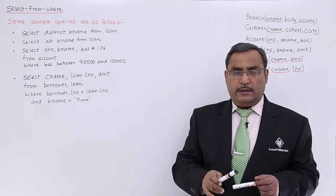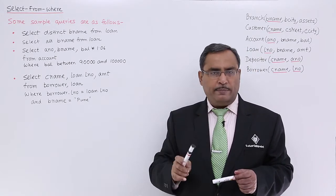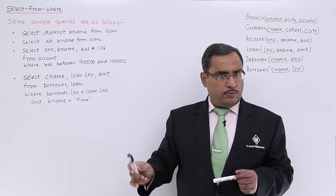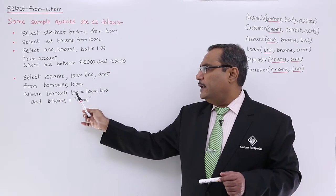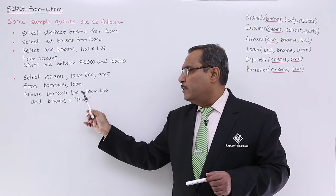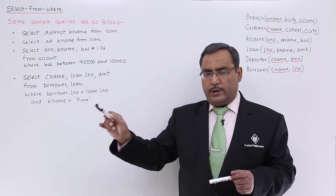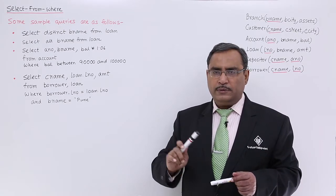If I want to get the feasible tuples where the borrower's loan number will be same as the loan's loan number, that is why we have written where borrower dot LNO is equal to loan dot LNO. In this way we are getting only those tuples where the respective two columns loan number will become the same.